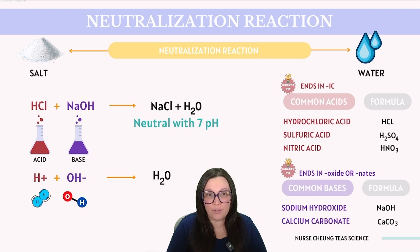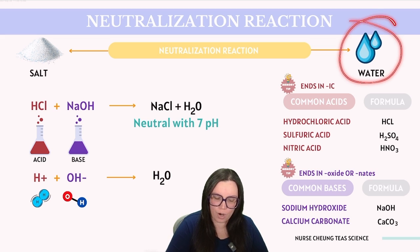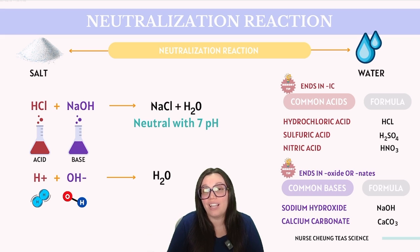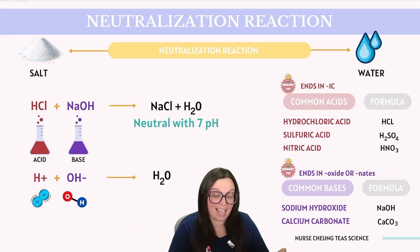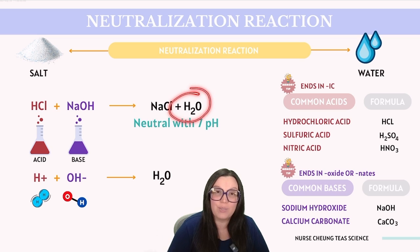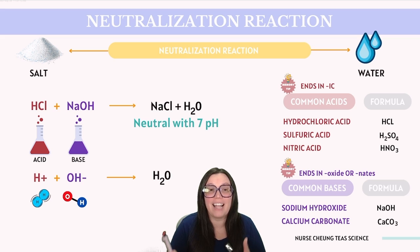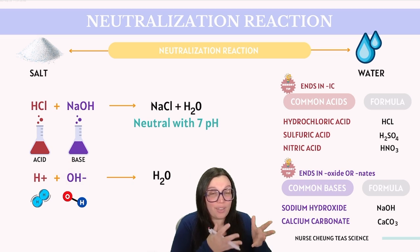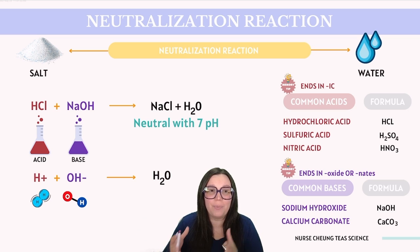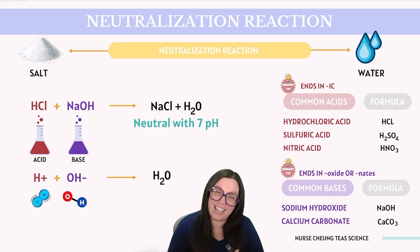When acids and bases are mixed together, they undergo a neutralization reaction. This reaction typically results in the formation of water as well as salt, effectively neutralizing the original acid and base properties. For instance, when hydrochloric acid reacts with sodium hydroxide, they produce sodium chloride and water. These neutralization reactions can also be represented at the ionic level, where hydrogen ions from the acid and OH⁻ ions from the base combine to form water. Since acids and bases neutralize each other, the pH of the resulting product is typically neutral, around a pH of 7.